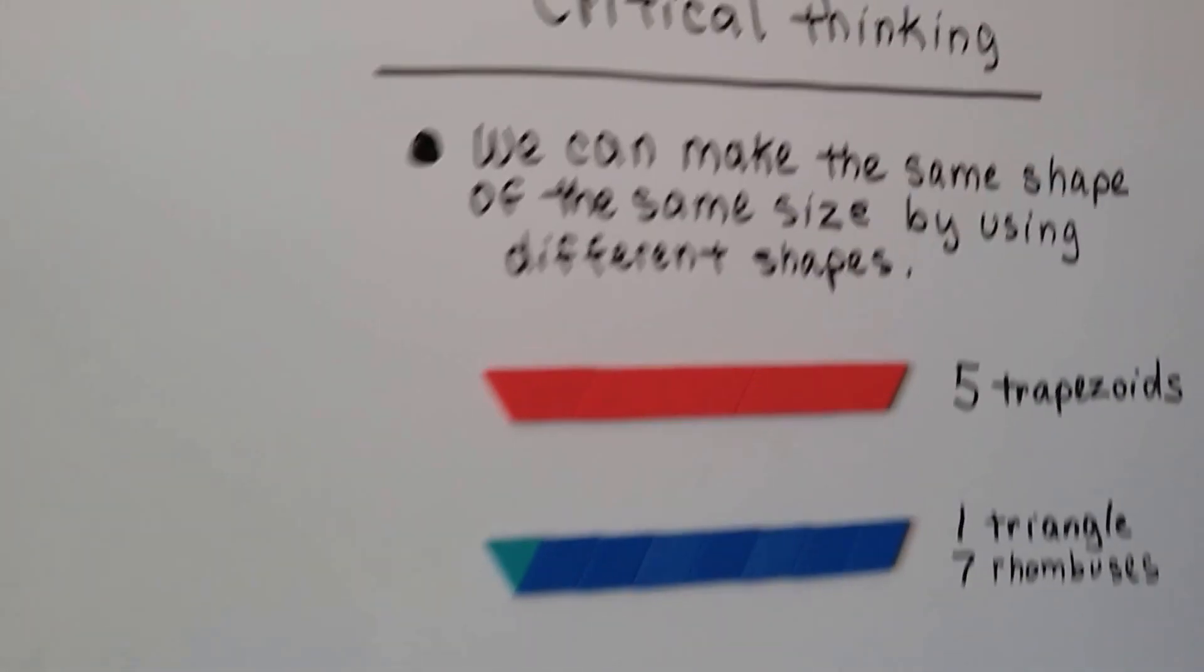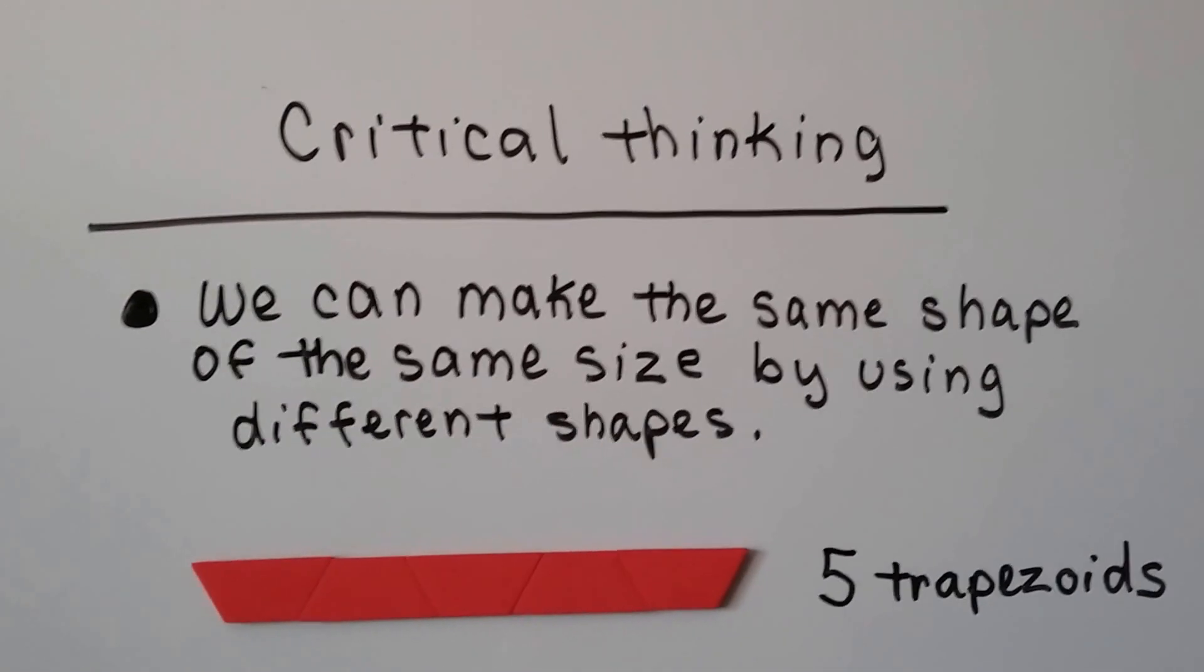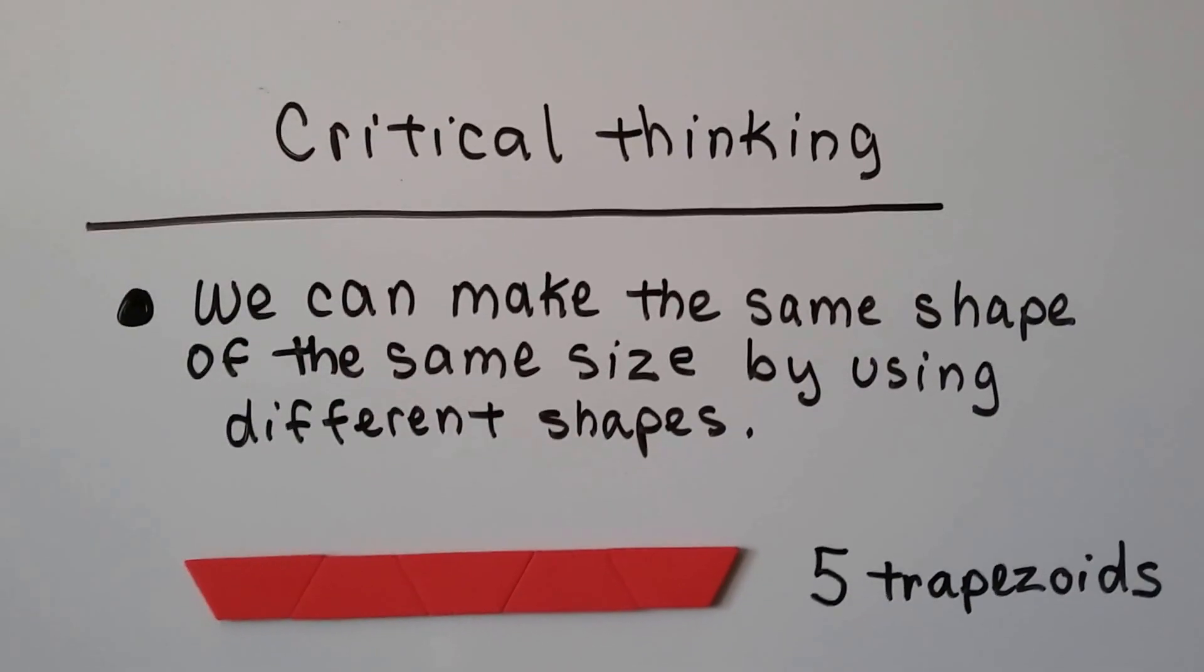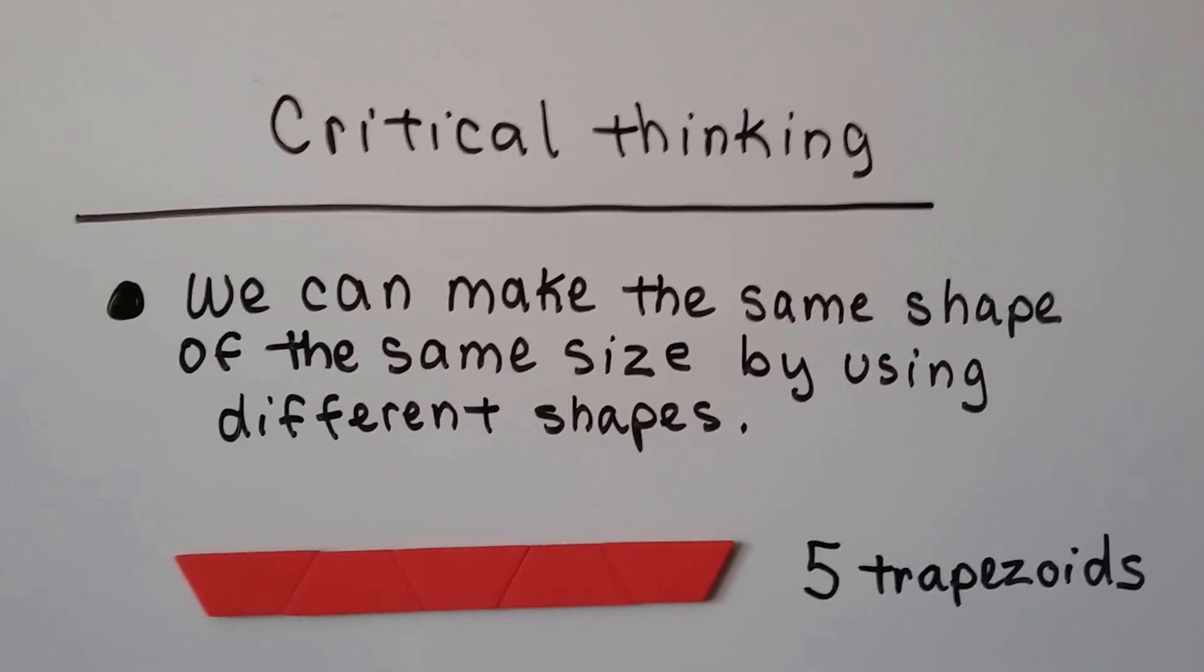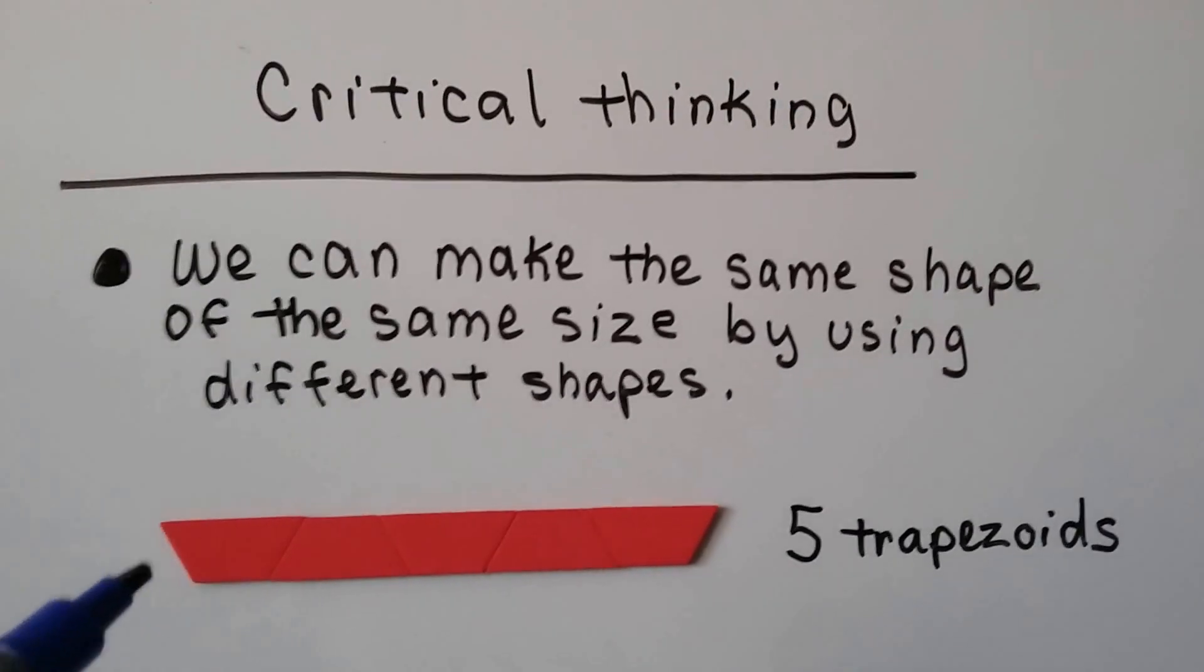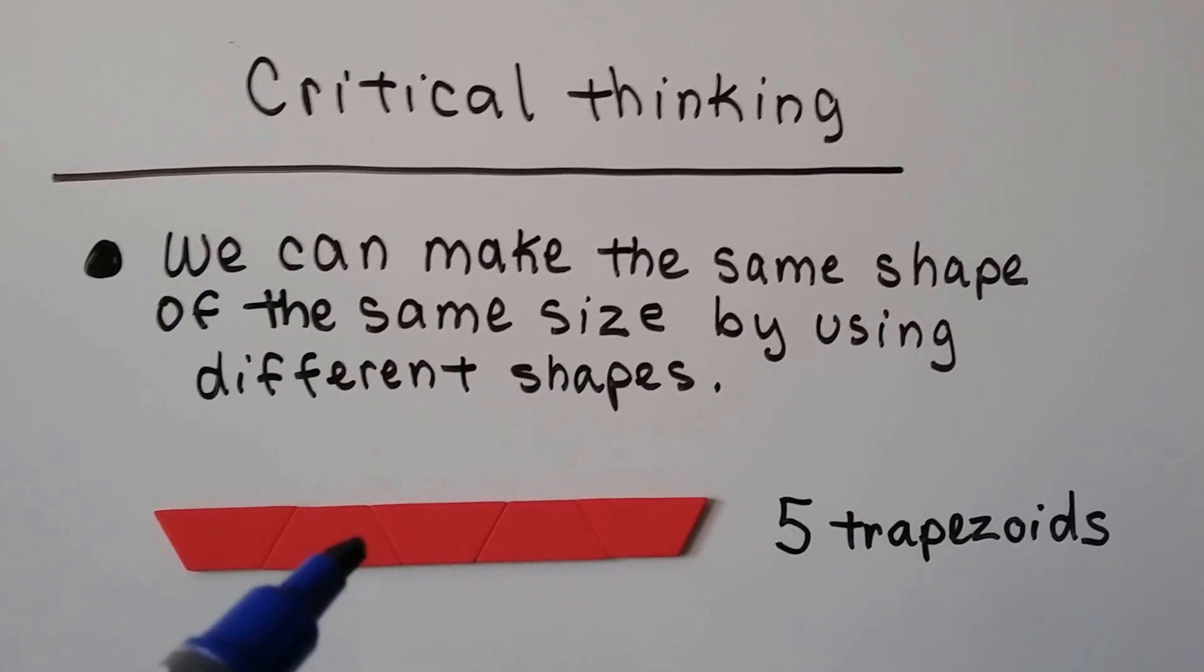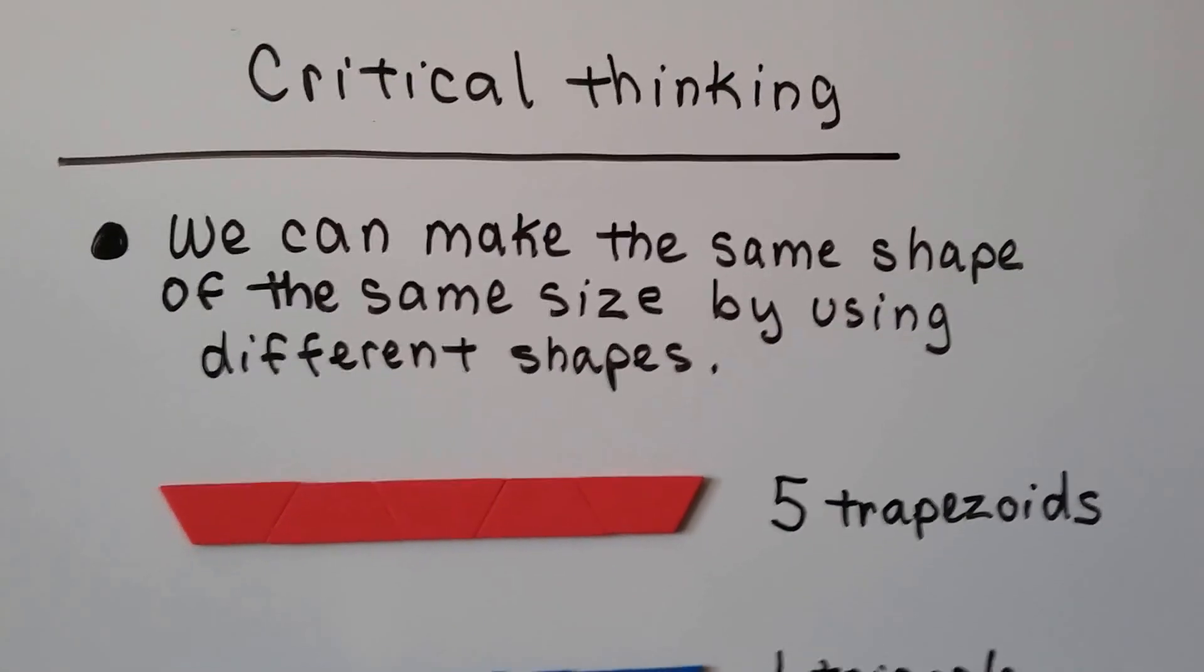Let's do some critical thinking. We can make the same shape of the same size by using different shapes. Here's five trapezoids. One, two, three, four, five.